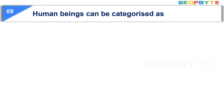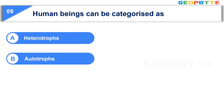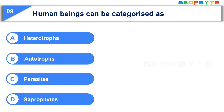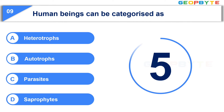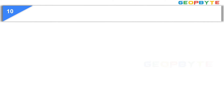The ninth question is: Human beings can be categorized as — Option A: Heterotrophs. Option B: Autotrophs. Option C: Parasites. Option D: Saprophytes. Your time starts now. Your time is up and the correct answer is Option A: Heterotrophs.